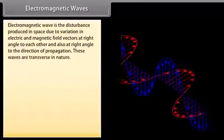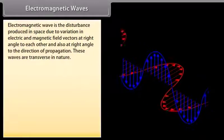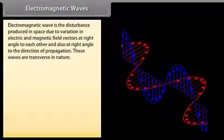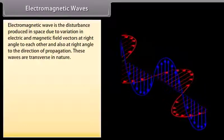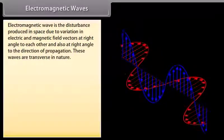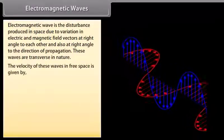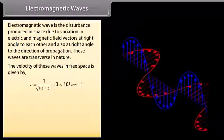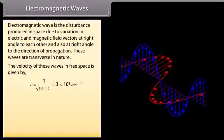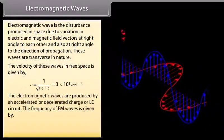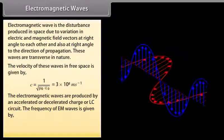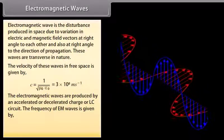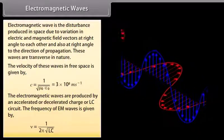Electromagnetic waves. Electromagnetic wave is the disturbance produced in space due to variation in electric and magnetic field vectors at right angle to each other and also at right angle to the direction of propagation. These waves are transverse in nature. The velocity of these waves in free space is equal to the velocity of light, which is equal to 3 into 10 raised to the power 8 meter per second. The electromagnetic waves are produced by an accelerated or decelerated charge of LC circuit. The frequency of EM waves is given by 1 upon 2 pi under root LC.